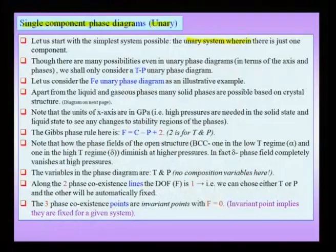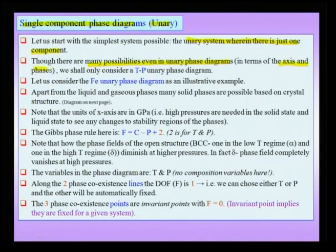Let us start by considering a single component phase diagram, which are also called unary phase diagrams. The unary system is one in which there is just one component; in other words, composition cannot be a variable in a unary phase diagram. But still there are many possibilities even in a unary phase diagram in terms of the axes and the phases which form. For an illustrative example, let us consider the iron unary phase diagram, in which temperature and pressure are the thermodynamic variables which are varied.